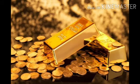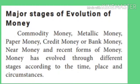The major stages of evolution of money are: commodity money, metallic money, paper money, credit money or bank money, near money, and modern forms of money. Money has evolved through different stages according to the time, place and circumstances.